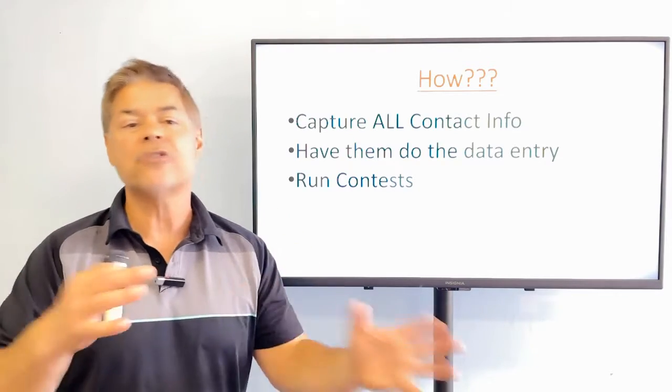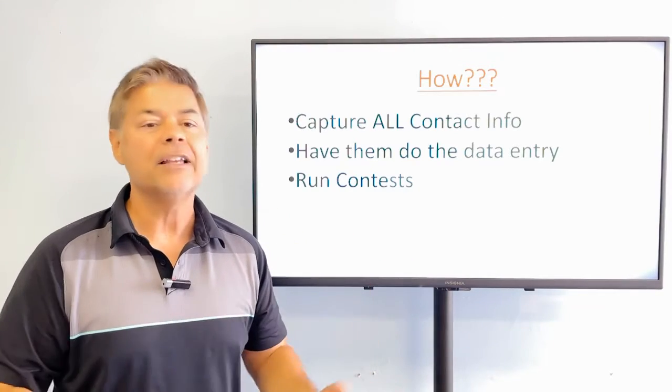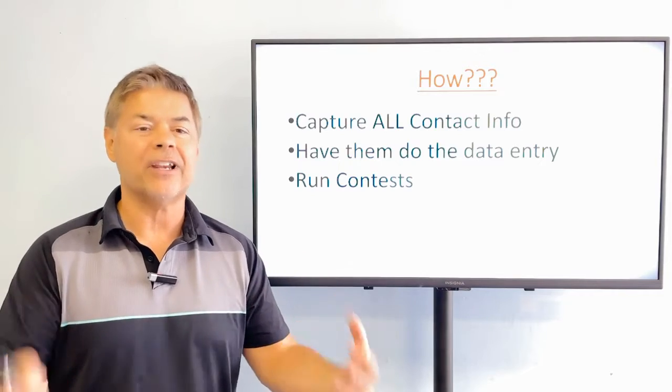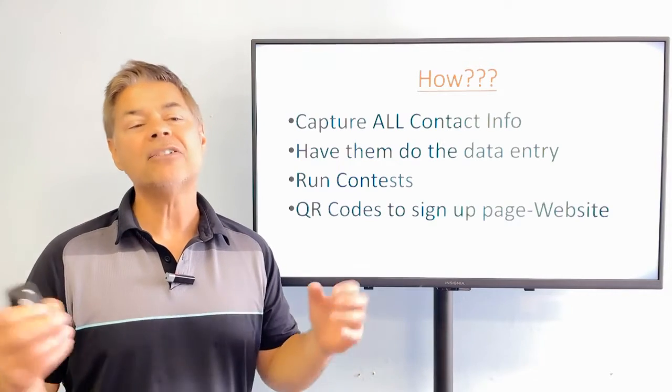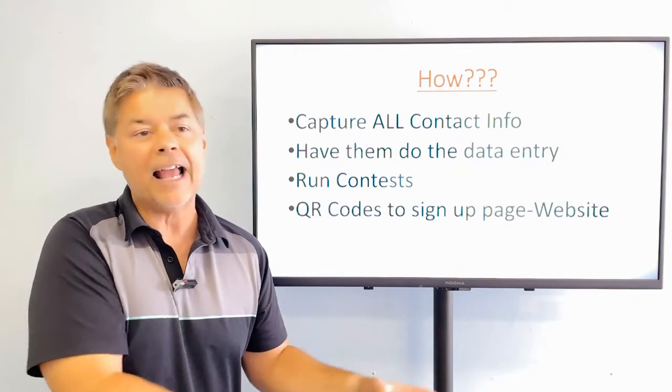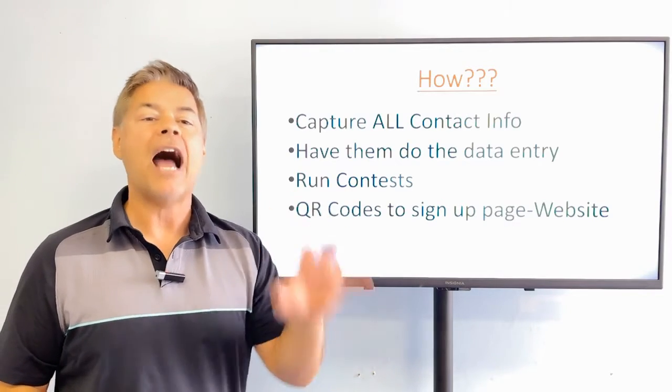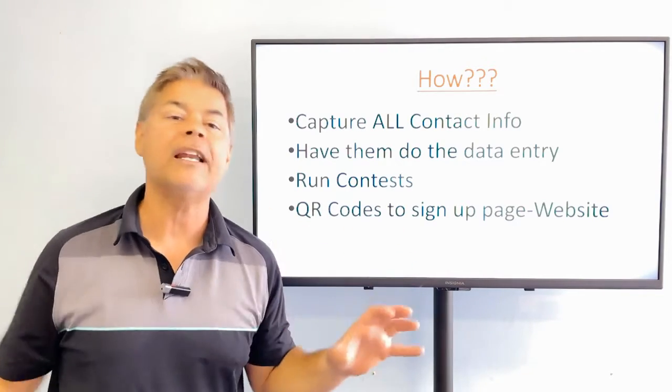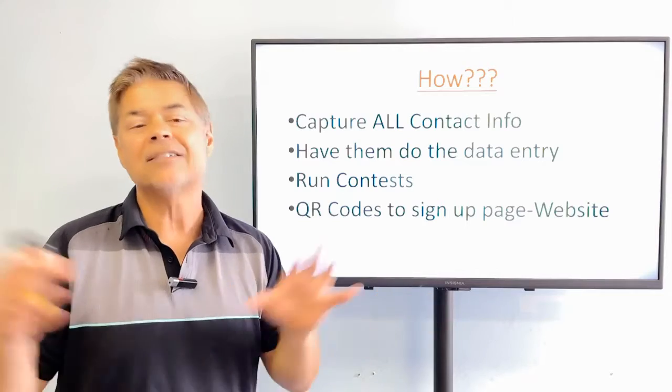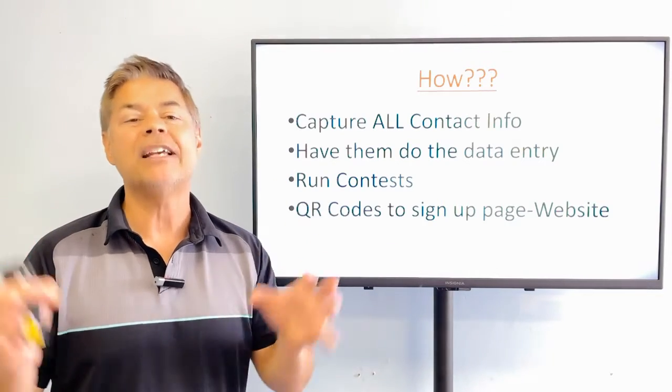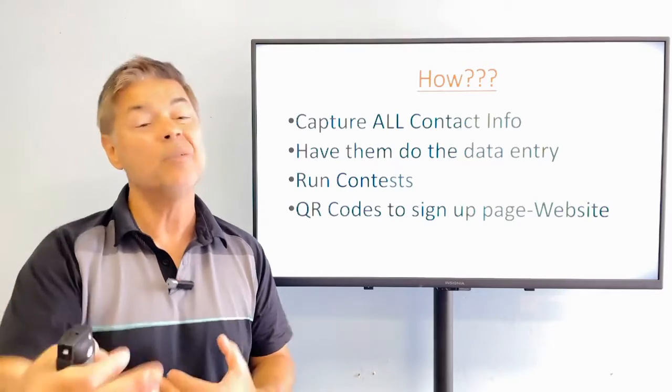You can do joint ventures with other businesses and give away certain things. If you have something bigger you can do it monthly, but that's just some ideas for carrots that you can use. And also to get them to do the work, the data entry, you could use a QR code that goes into a sign up page on your website that goes right into your Mailchimp account. Constant Contact, whatever the case may be, wherever you're housing your customer list, which is the most important asset of your business.